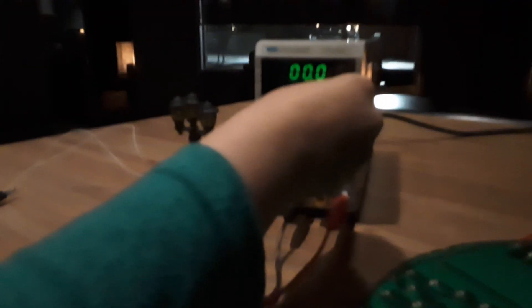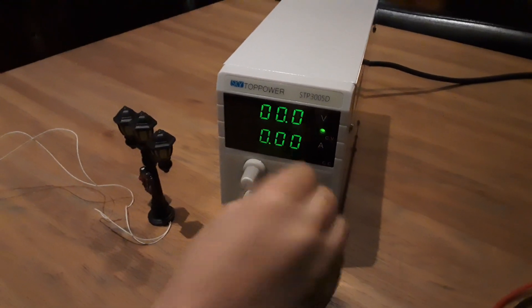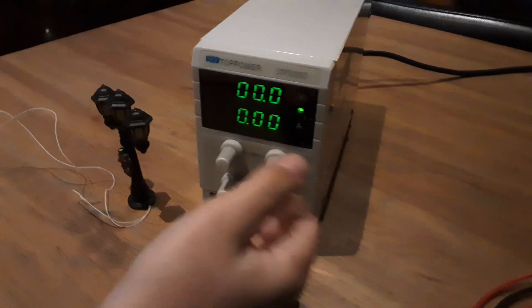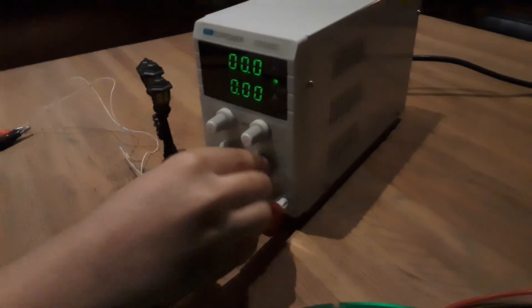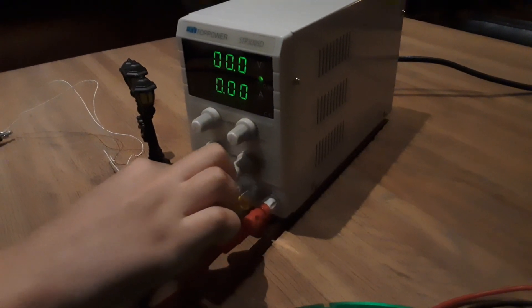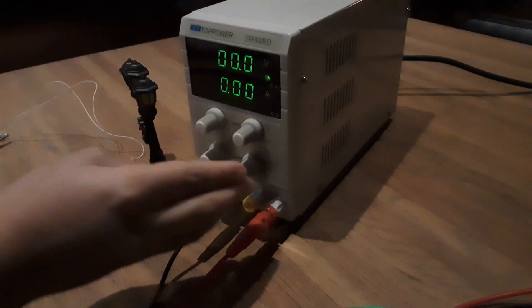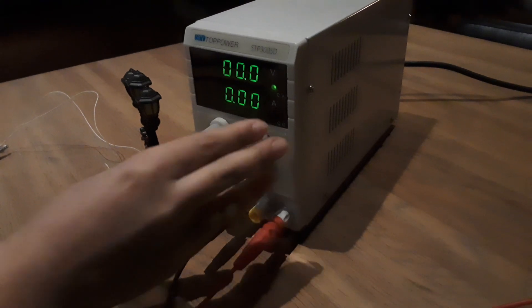On top you've got your voltage adjustment, fine and coarse. You have your power switch to turn it off and on, self-explanatory. Here you have your current in amps, with fine adjustment and coarse adjustment just like the volts.